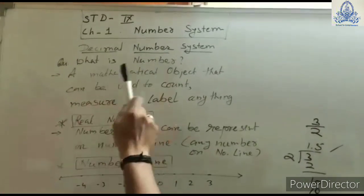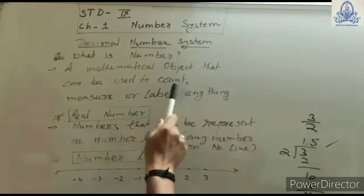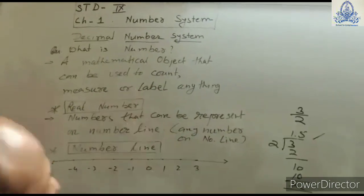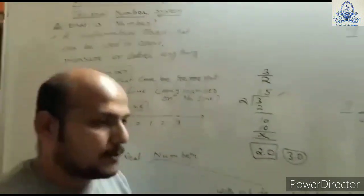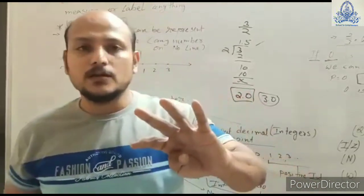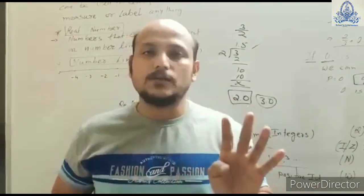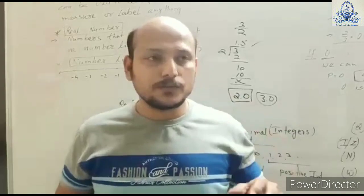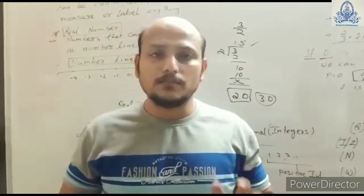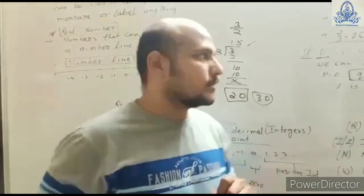Now, what is a number? A mathematical object that can be used to count, measure, or label anything is called a number. For example, if I say how many fingers I have, you can say 4 fingers are here — that is counting. So to count anything we need a number, and a number defines that counting digit.